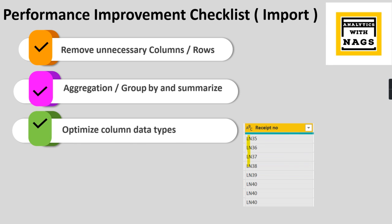Another important aspect that most people are not aware of is to optimize the column data types. You need to properly set the data type, and whenever there are possibilities, convert text columns to numerical columns. If a numerical column is classified as text, change it to numerical. In this example, you can see the receipt number is classified as text.